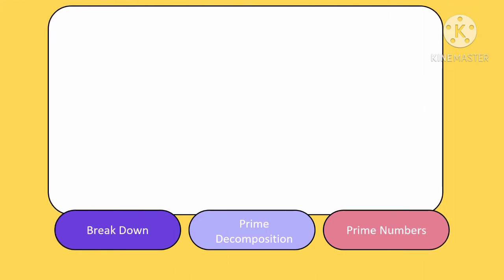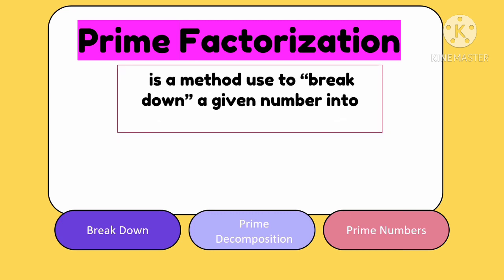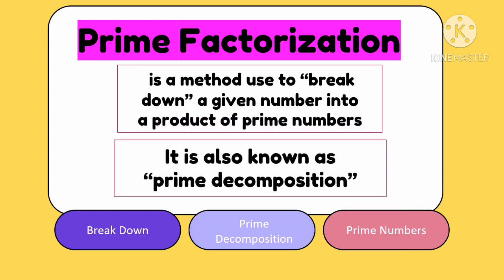In order for us to write a given number as product of its prime factors, we are going to use prime factorization. Then what is prime factorization? Prime factorization is a method used to break down a given number into a product of prime numbers. It is also known as prime decomposition.